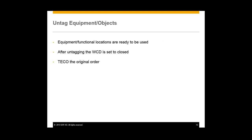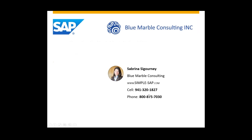That's the basic process flow for work clearance management. What we did was create a maintenance order and activate WCM from there, created a work approval, then created our work clearance application, created the work clearance document, approved the tagging, tagged the equipment, and then after the work was completed, we untagged everything and closed out our work clearance document and work clearance application. If there are any other questions regarding work clearance management, please call one of our numbers here or visit our website at simple-sap.com.